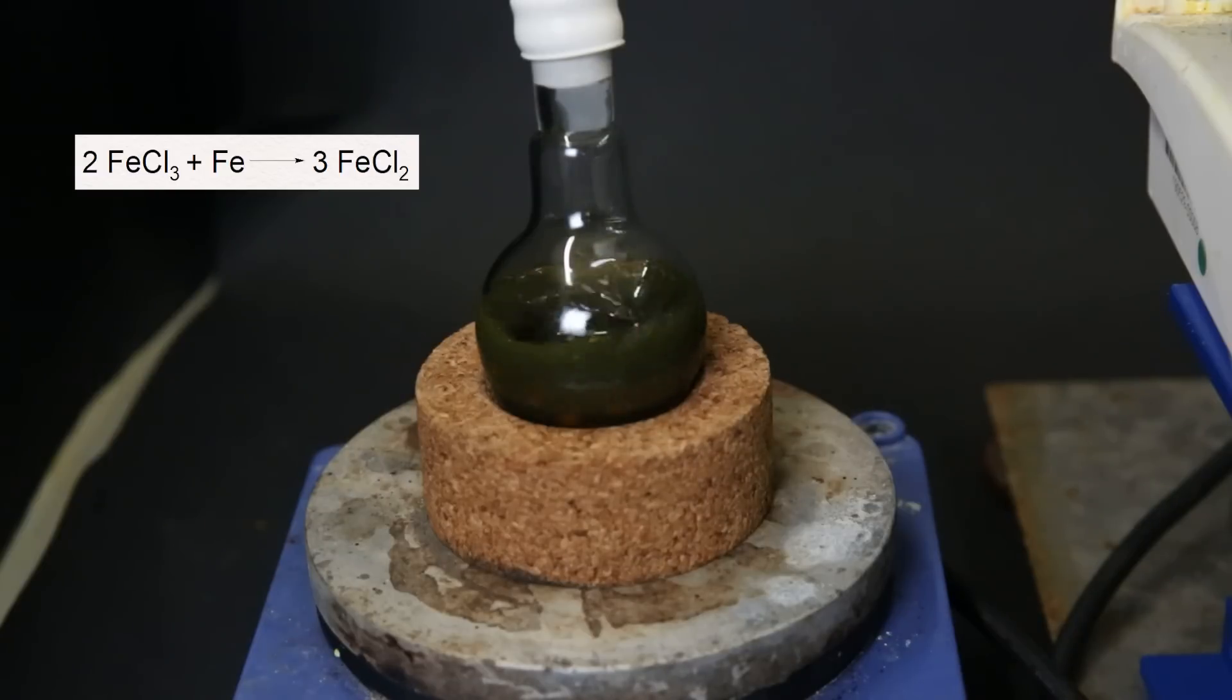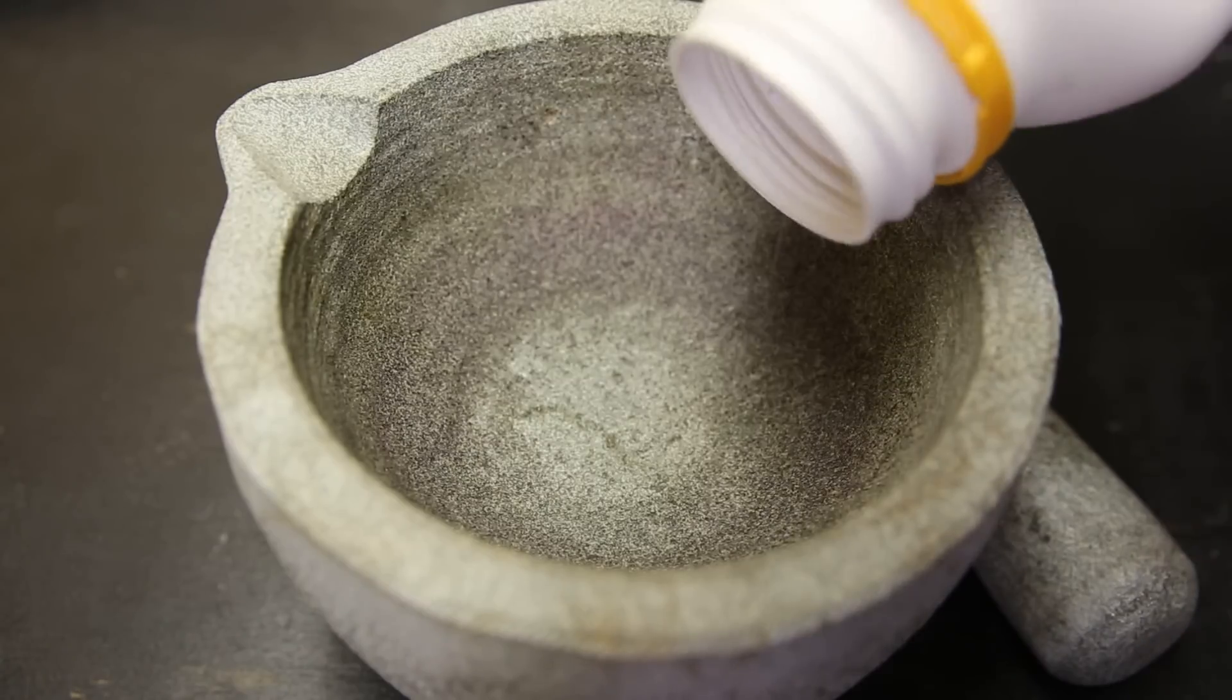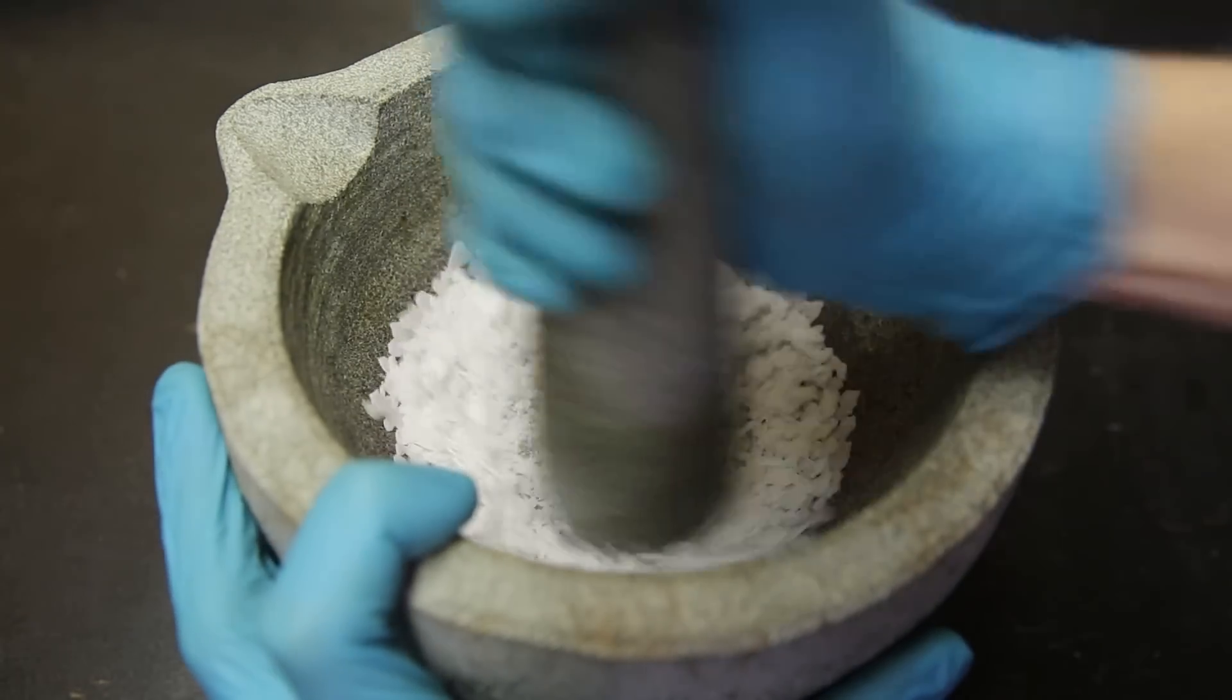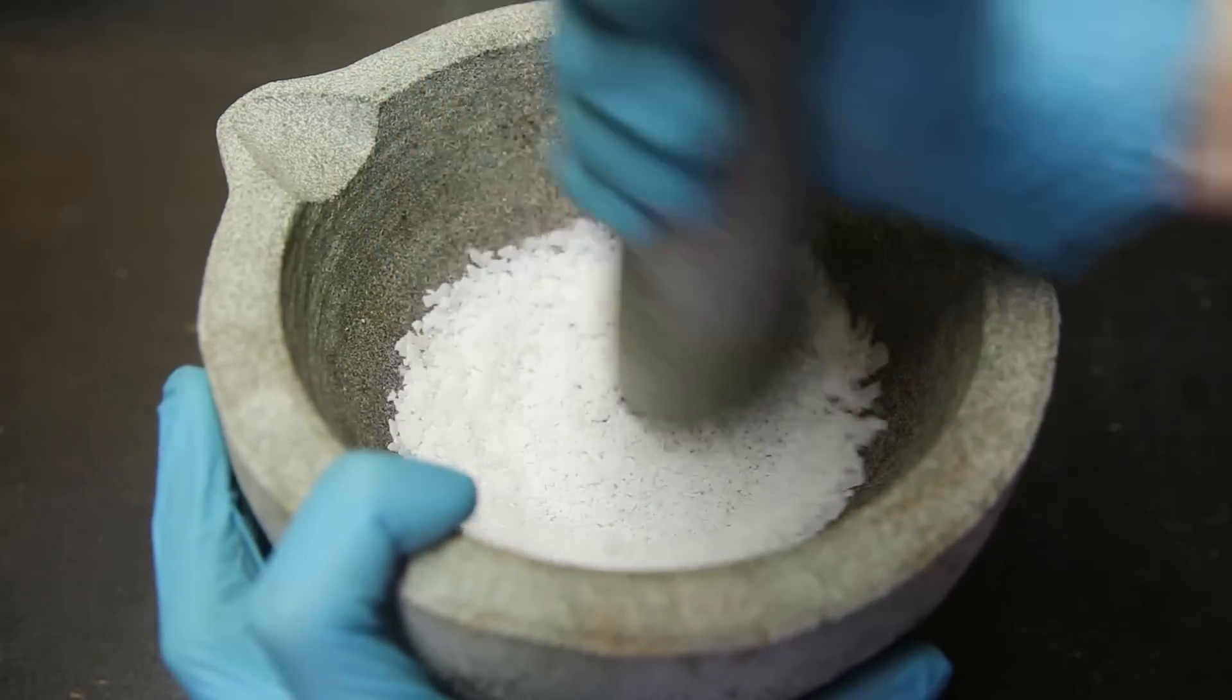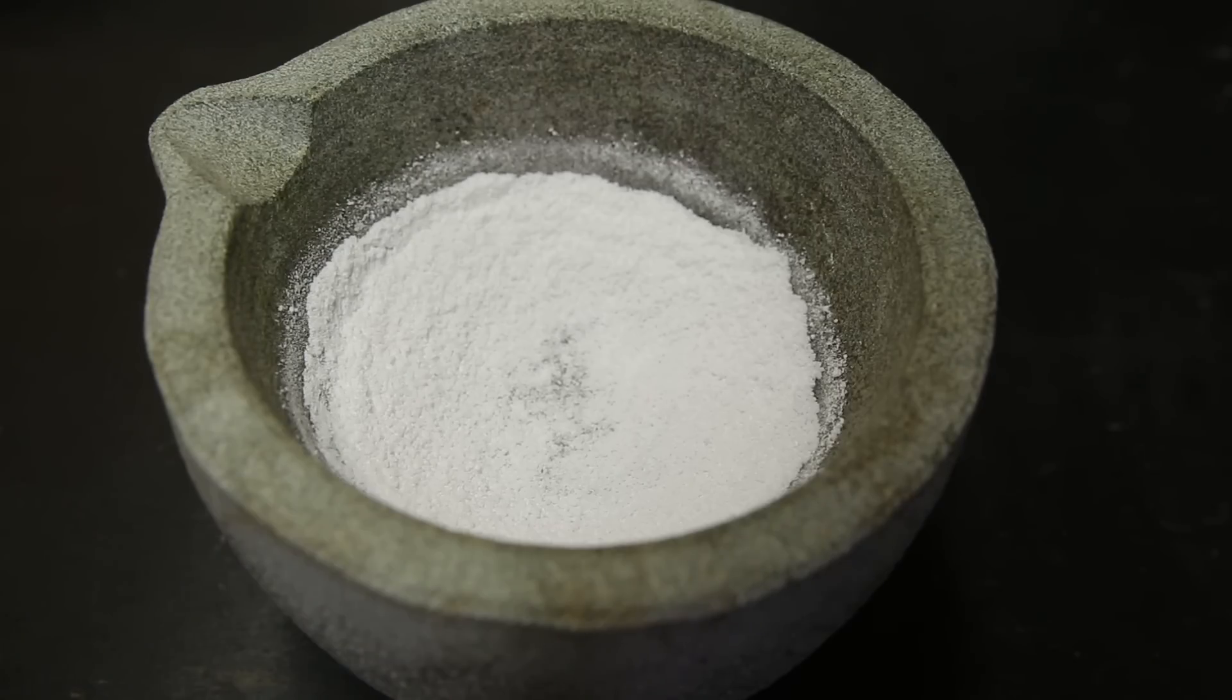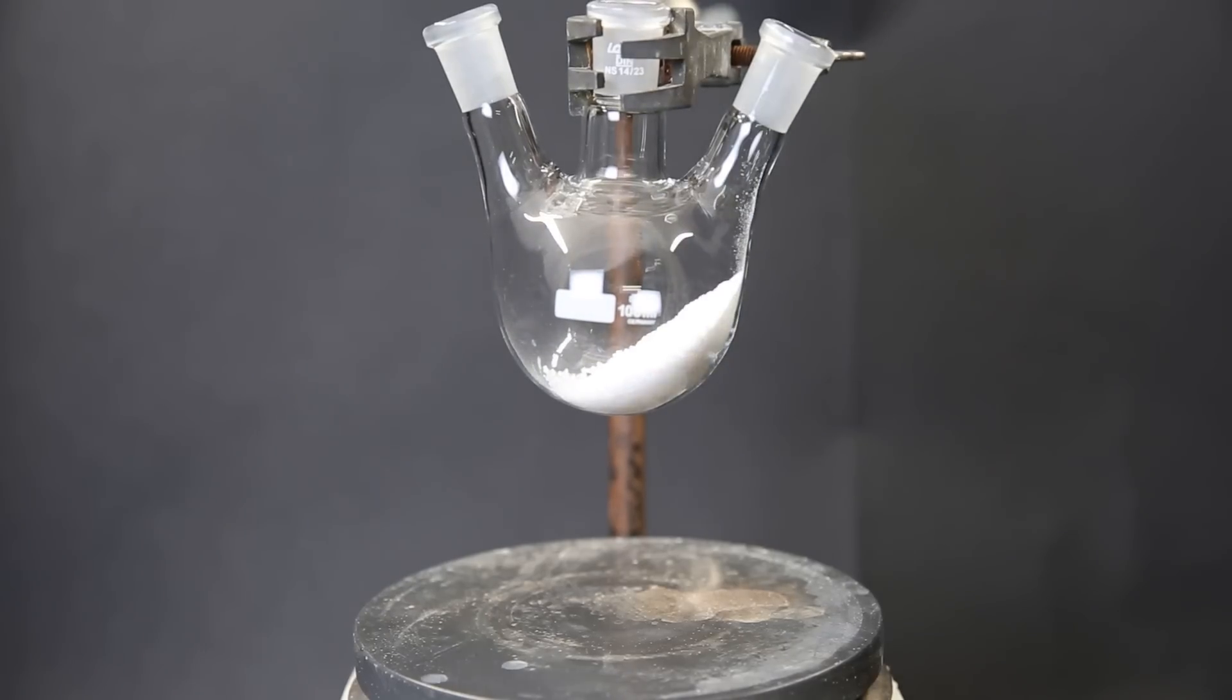So now I just leave it to stir for a while and start the next step. To get a slightly better yield, I grind up some potassium hydroxide into a fine powder to increase its surface area. Then I add 20 grams of the powder to a flask and drop in a stir bar.